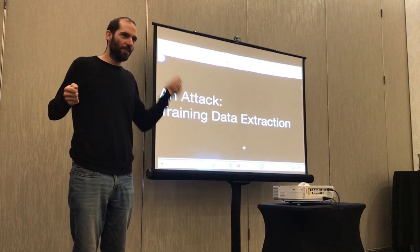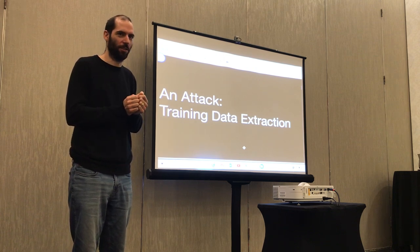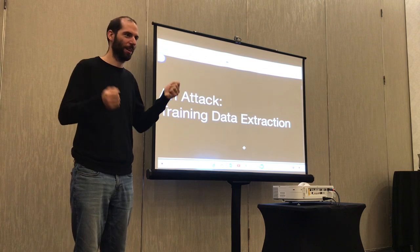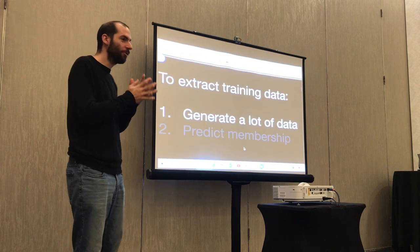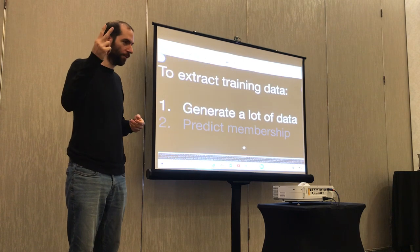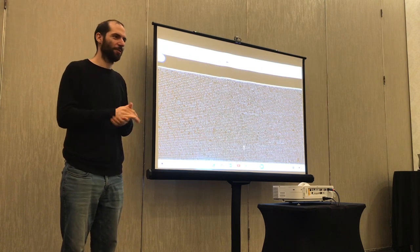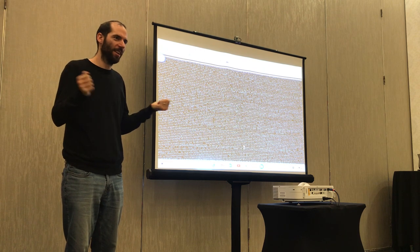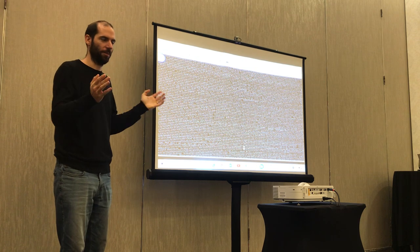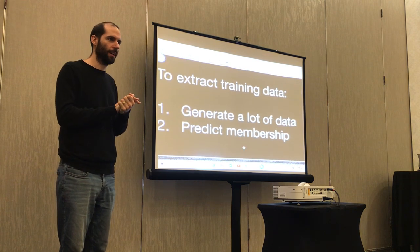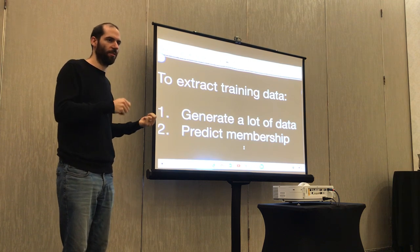So we want to understand to what extent models spit out data that comes from a training dataset versus actual benign novel generations. How many people here are familiar with how you do training data extraction from language models? Here's how you extract training data from large language models in two steps. Step one: you generate a lot of data. This is easy — if you ask language models for data, they give it to you. The second step is what's hard: somehow you need to predict which sequences of text were training examples and which are novel generations.